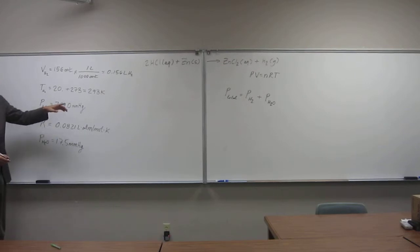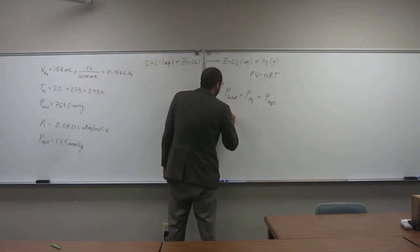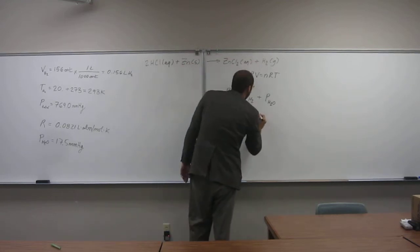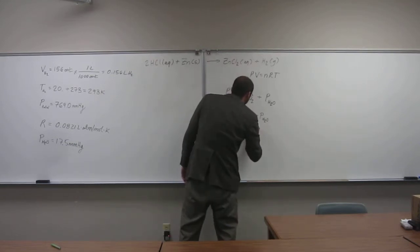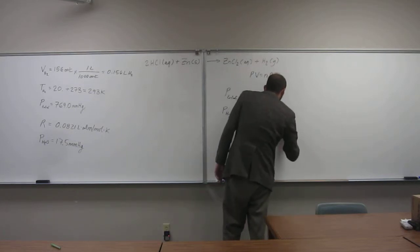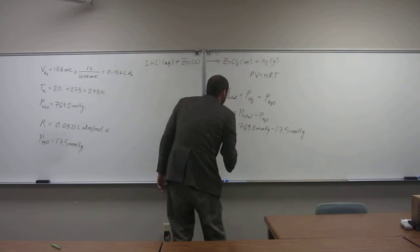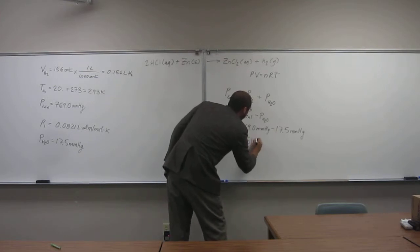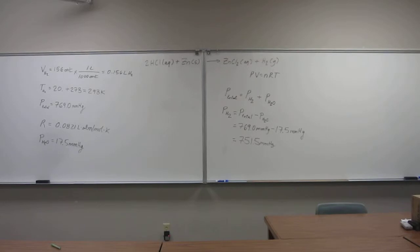Let's figure out the pressure of hydrogen gas. Let's do that before we convert it to atm. The pressure of hydrogen gas is going to equal the pressure total minus the pressure of water. The total pressure was 769.0 minus 17.5, which gives us 751.5.